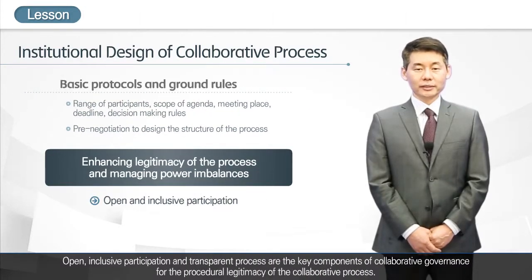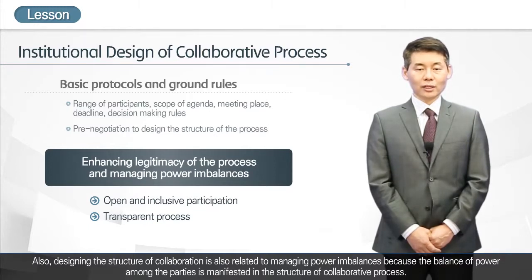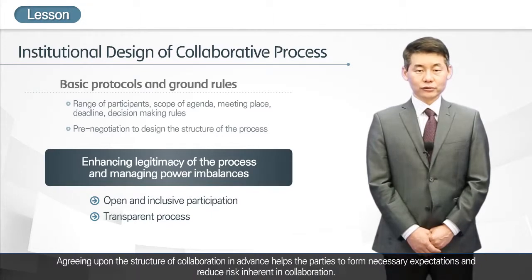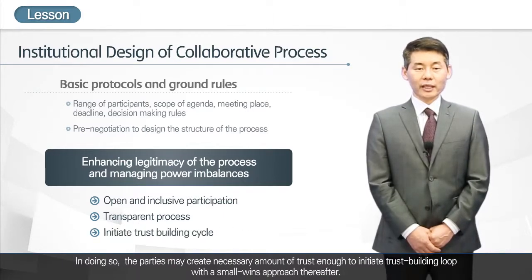Open, inclusive participation and a transparent process are key components of collaborative governance for procedural legitimacy. Designing the structure of collaboration is also related to managing power imbalances, as the balance of power among the parties is manifested in the structure of the collaborative process. Agreeing upon the structure in advance helps the parties form necessary expectations, reduce inherent risk, and create enough trust to initiate the trust-building loop with a small wins approach thereafter.